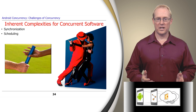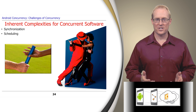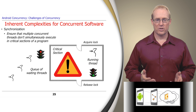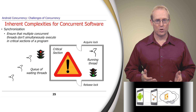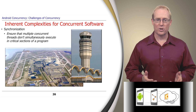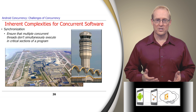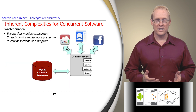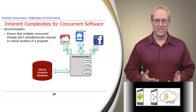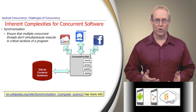Some common inherent complexities of concurrent software relate to synchronization and scheduling, which deal with the order and/or time in which operations are performed. Synchronization ensures that multiple concurrent threads don't execute critical sections of a program at the same time and thus corrupt shared resources. For example, air traffic controllers must synchronize access to a runway, which is a shared resource, to ensure airplanes don't collide on takeoff or landing. Likewise, Android needs to synchronize access to the SQLite contacts database to ensure that applications running concurrently on the device don't corrupt the raw contact entries. This link contains more information on synchronization.